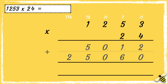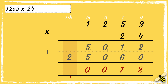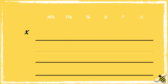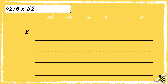The next step is to add the two answers together. So two add zero is two, one add six is seven, zero add zero is zero, five add five is ten, and then two add one is three. So the answer is thirty thousand and seventy-two. Let's have a look at one more example: four thousand two hundred and sixteen multiplied by fifty-two.